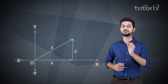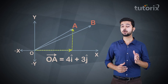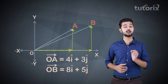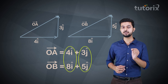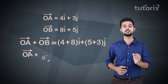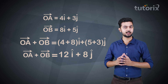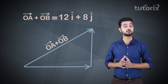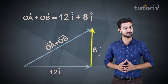Let me show you with a simple example — let's add vector OA and vector OB from the previous example. Vector OA equals 4î + 3ĵ and vector OB equals 8î + 5ĵ. To add these vectors, we add their respective components: î with î and ĵ with ĵ. So vector OA plus vector OB equals (4 + 8)î + (5 + 3)ĵ, which becomes 12î + 8ĵ. This resultant has a component of 12î along the x-axis and 8ĵ along the y-axis.